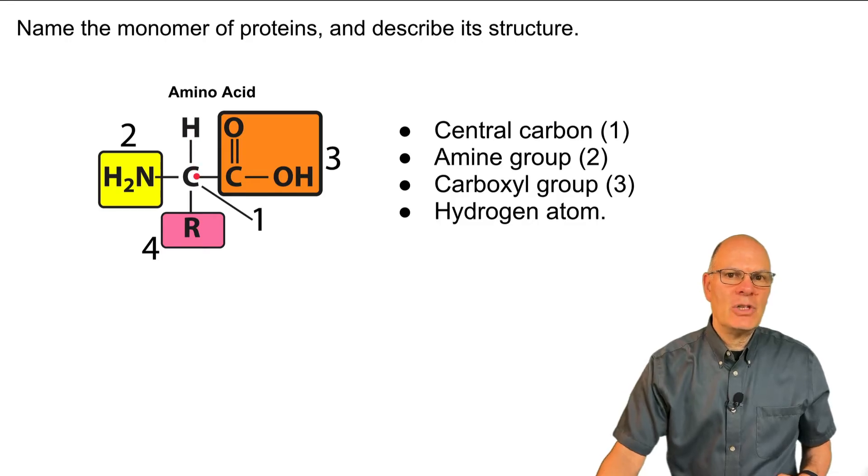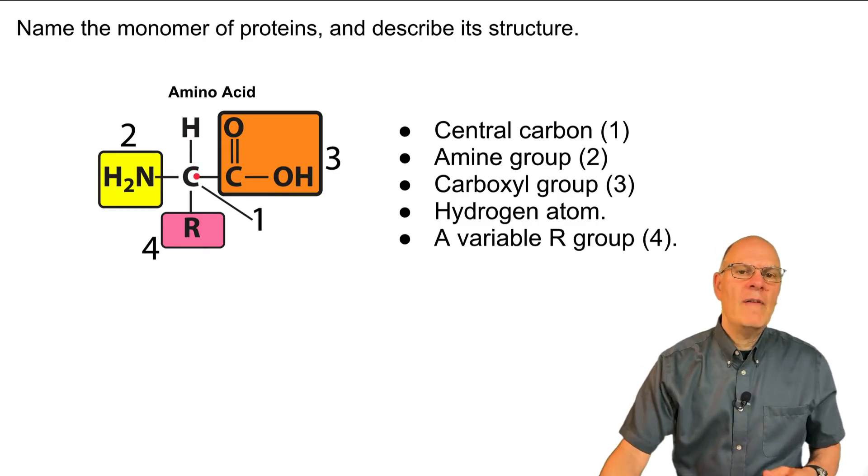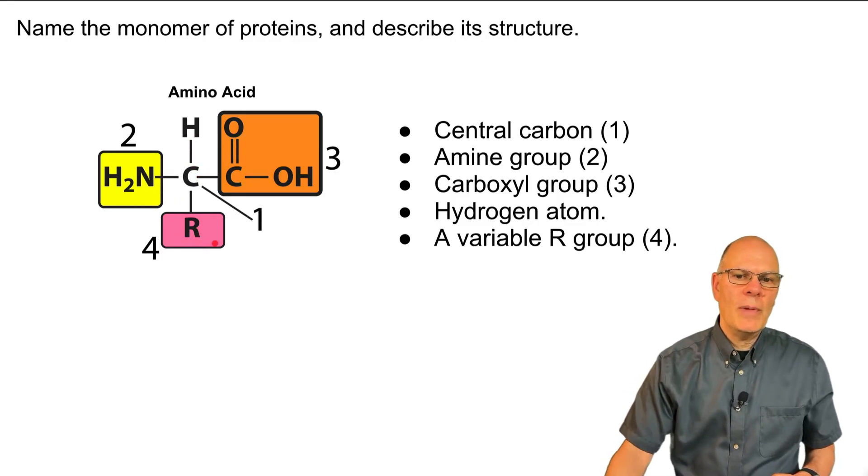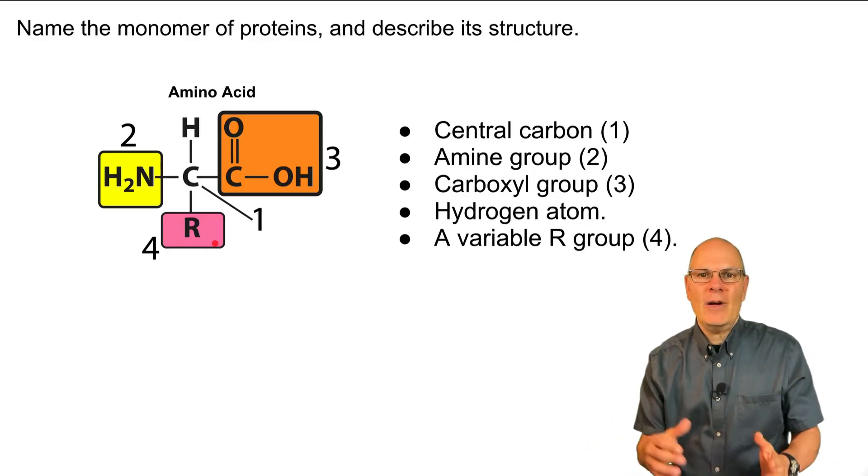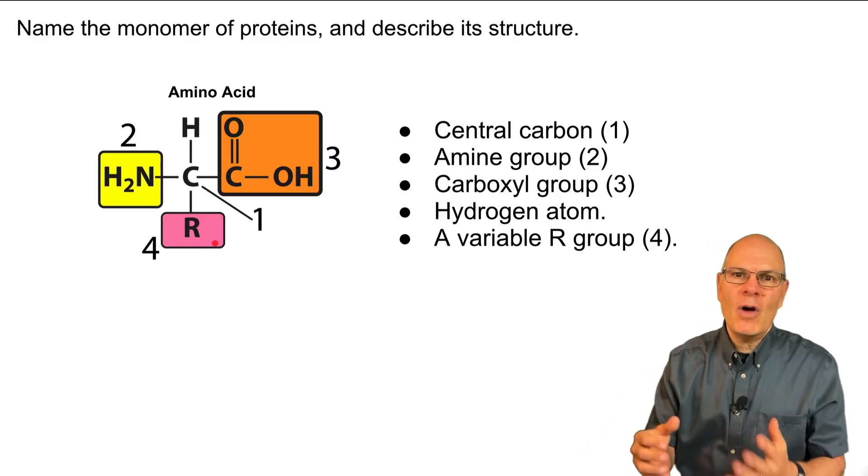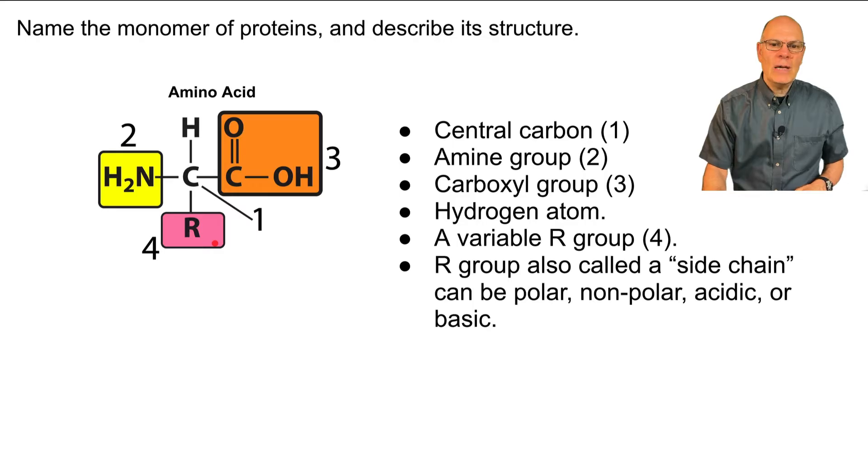There's a hydrogen atom attached to the central carbon and then there's a variable group or an R group and there are 20 variations and that's true of all life. All life is built of the same 20 amino acids. That R group is also called a side chain and it can be polar, nonpolar, acidic or basic.